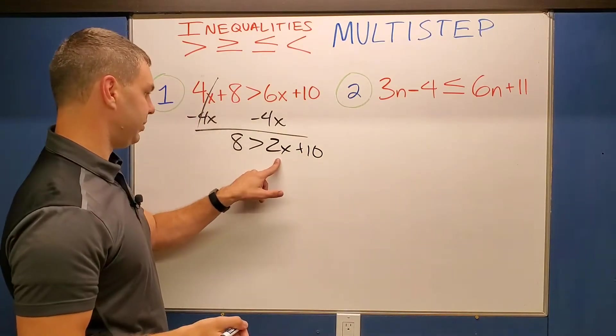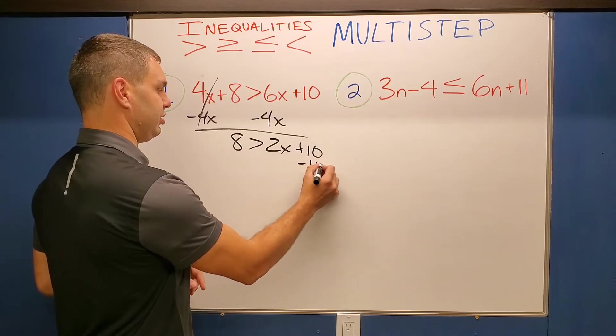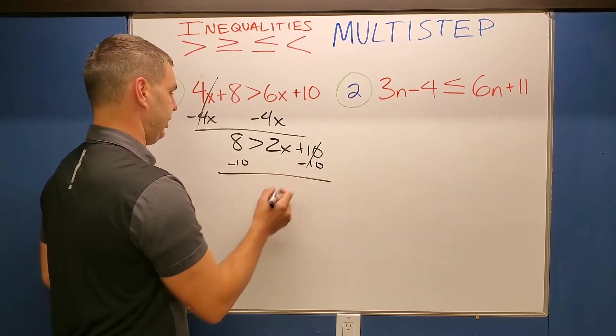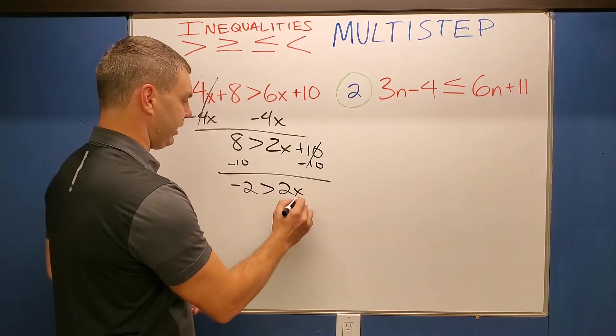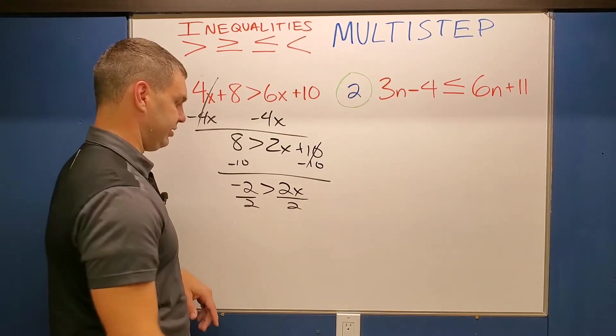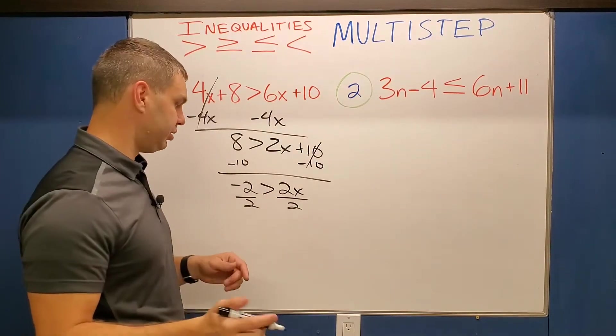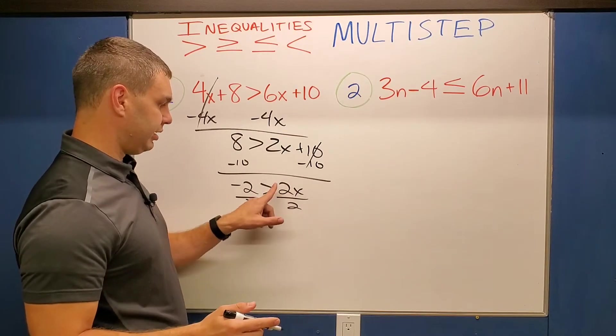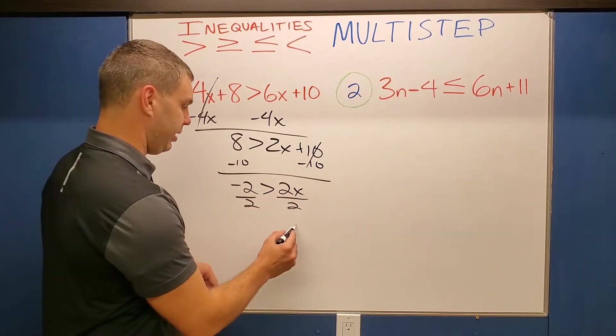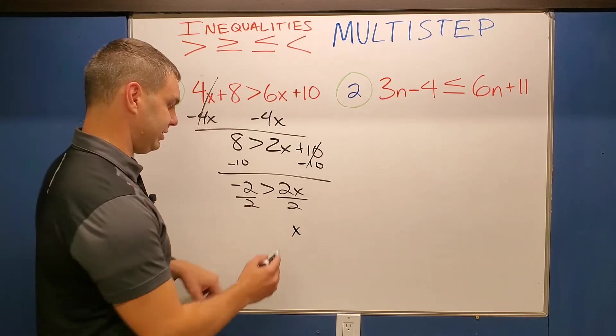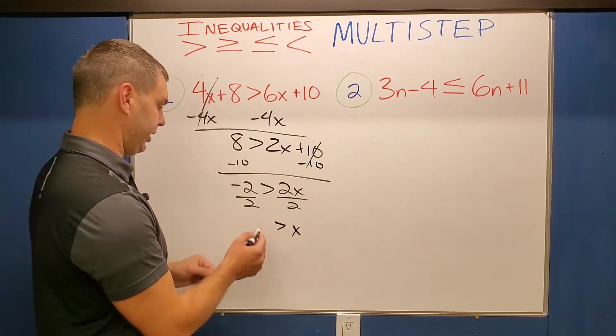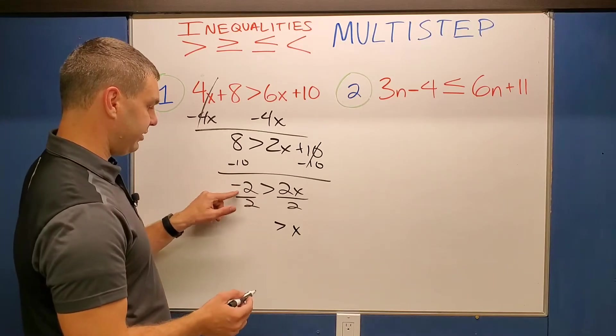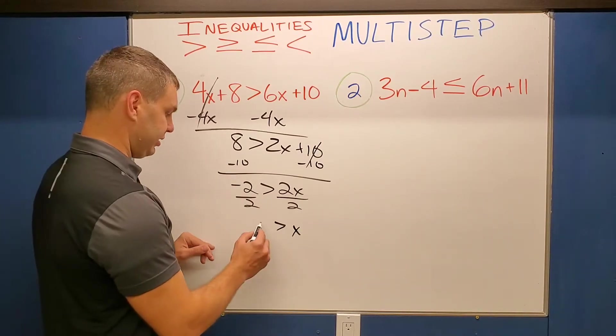Alright, so then here's my x so I need to move this 10 over probably by subtracting it. And let's see, 8 minus 10 is a negative 2 is greater than 2x. So to get the x by itself, I need to divide by 2. Now a couple things here I need to point out is first, this is being divided by a positive, not a negative. So our sign is not going to switch. It's gonna stay greater than right here. Okay, but it is a negative divided by a positive, so that's gonna be a negative 1.